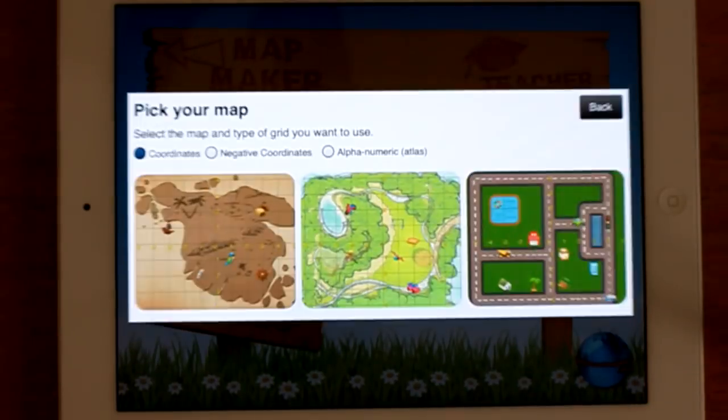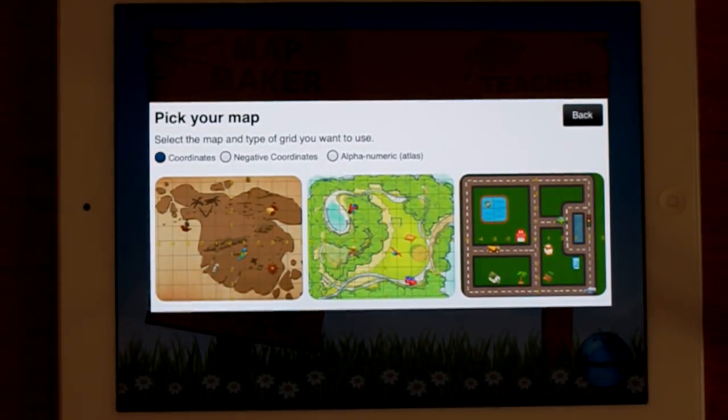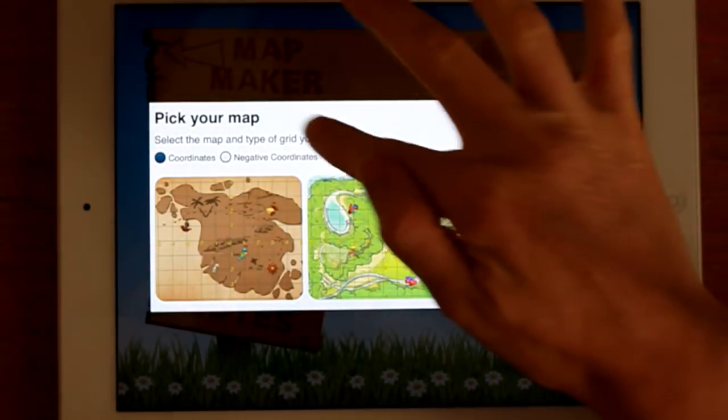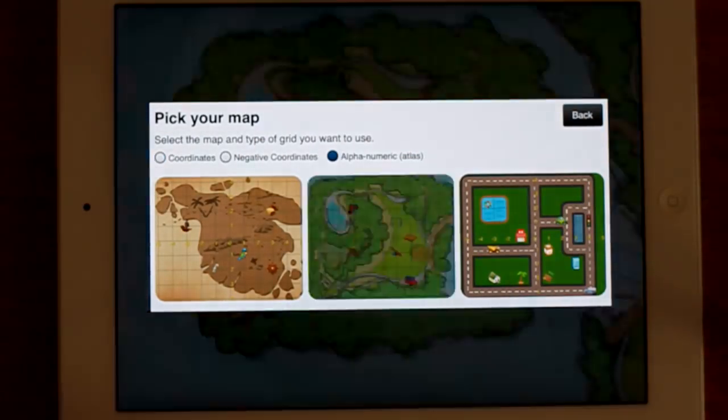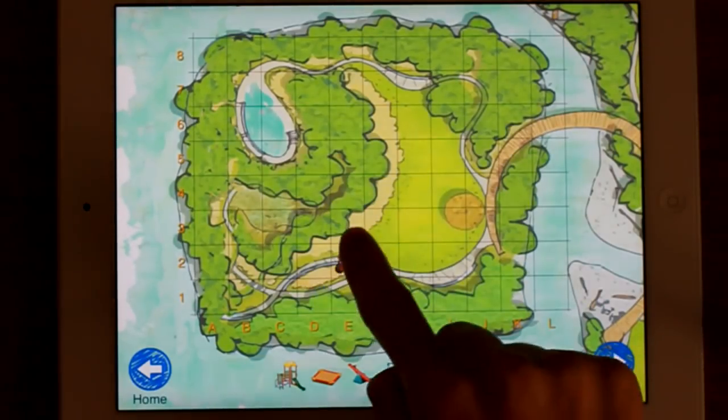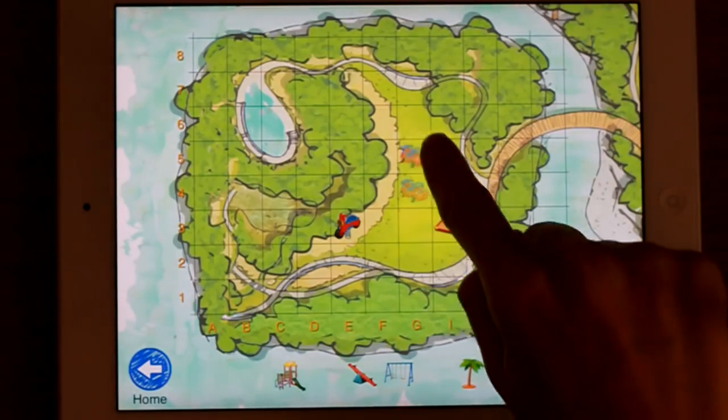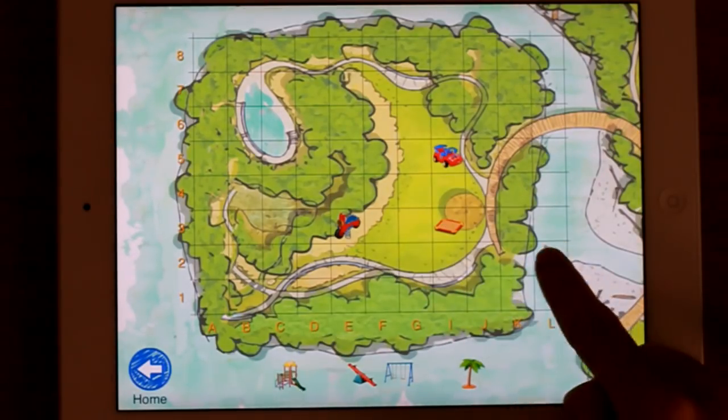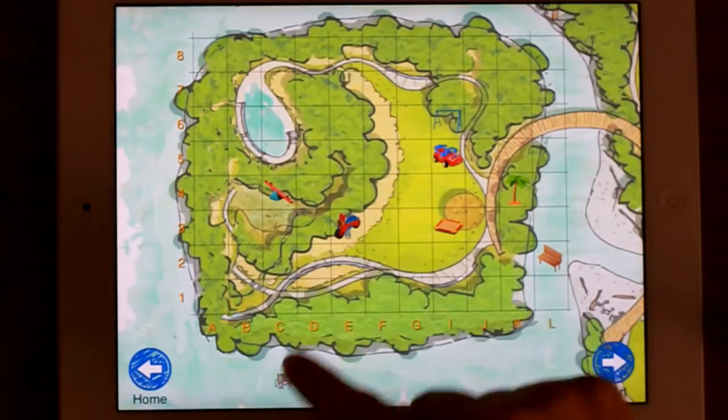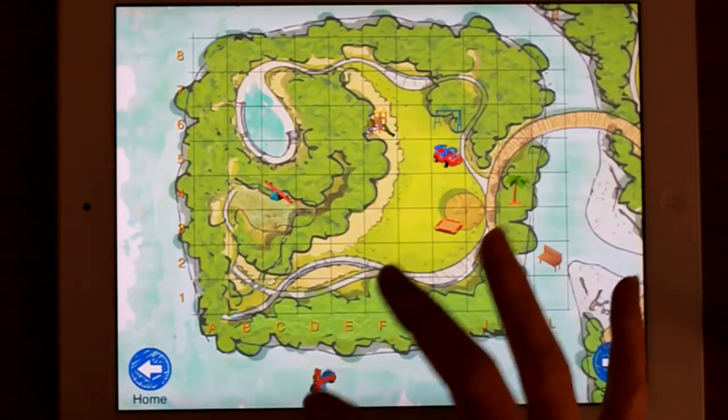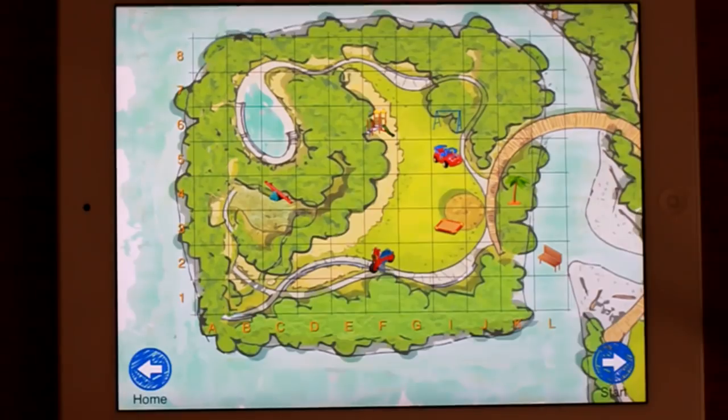And now we'll have a look at Map Maker. Map Maker, similar to Map Reading, choose what type of map you want and what type of grid you want to use. So you must pick this one first. I'm going to pick alphanumeric. This time I'll pick the park. So you simply move the objects to where you want them. Now you can put them in the water if you really wanted to. It's up to you. You don't have to put them all on. I will put them all on. I'll show you what happens in a moment.